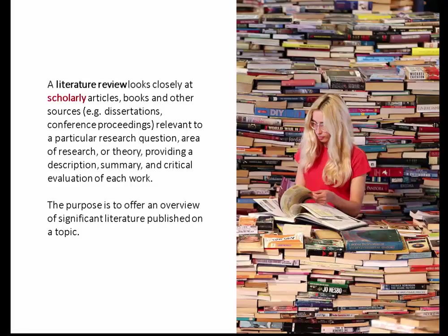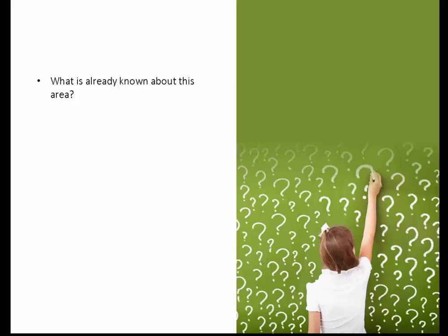Literature review looks closely at scholarly articles — a lot of it nowadays works through journal articles. The purpose is to offer an overview of scientific literature published on a topic. What are the questions that guide you? Well, first of all, we want to know what is already known about this area. There are lots of people all over the world researching different things, so who knows who else already researched social inequality and health in Ireland?